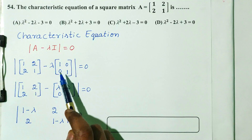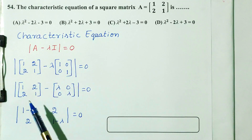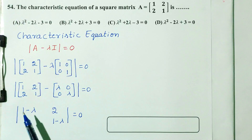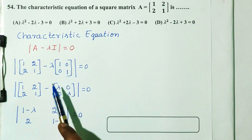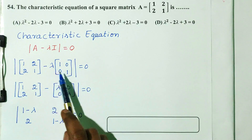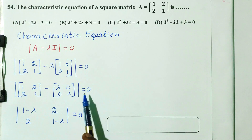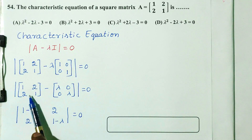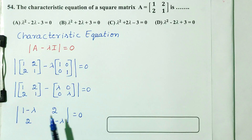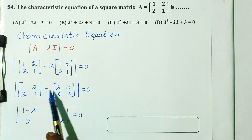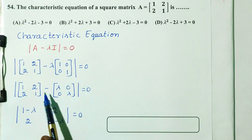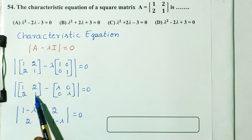So we subtract lambda times the identity matrix. The identity matrix has 1 on the principal diagonal and 0 for remaining elements. This gives the matrix: (1 minus lambda), 2, 1, (1 minus lambda), set equal to 0.